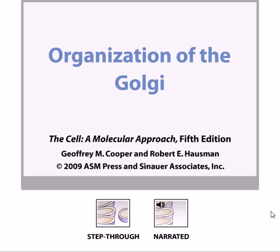Protein is made inside the endoplasmic reticulum lumen and has to be carried out from the ER via the Golgi network towards the destination point. The Golgi body is present between the ER, which is the starting point, and destination organelles like mitochondria, plastids, and lysosomes. The Golgi apparatus also helps proteins to be secreted outside the cell.